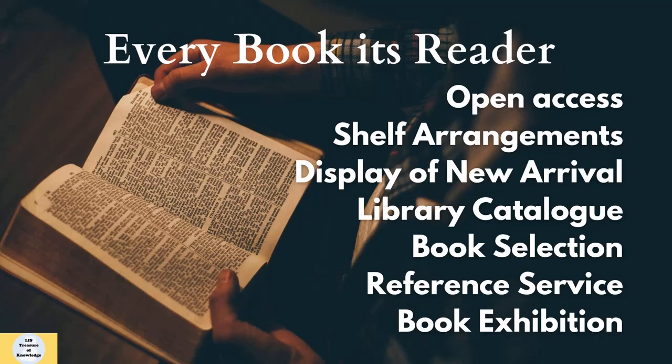Earlier, books were preserved under lock and key. But Ranganathan's movement changed this concept, and an open access system was introduced where readers are allowed to go inside the library, browse the collection, and select their desired books. This helps readers know the availability of the collection and increases library use. Proper shelf arrangement according to a classification scheme is also essential — if books are not arranged in a helpful sequence, even a rich collection becomes useless.